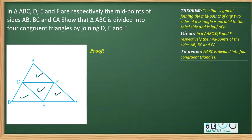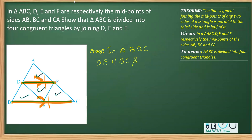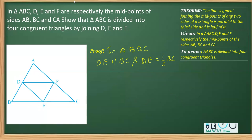Now let's begin with the proof. We will apply the midpoint theorem. D and E are the midpoints of two sides, so DE will be parallel to BC and the length of DE will be half of BC. In triangle ABC, we can directly apply the midpoint theorem and state: DE is parallel to BC and DE is equal to half of BC. The reason is: using the midpoint theorem.